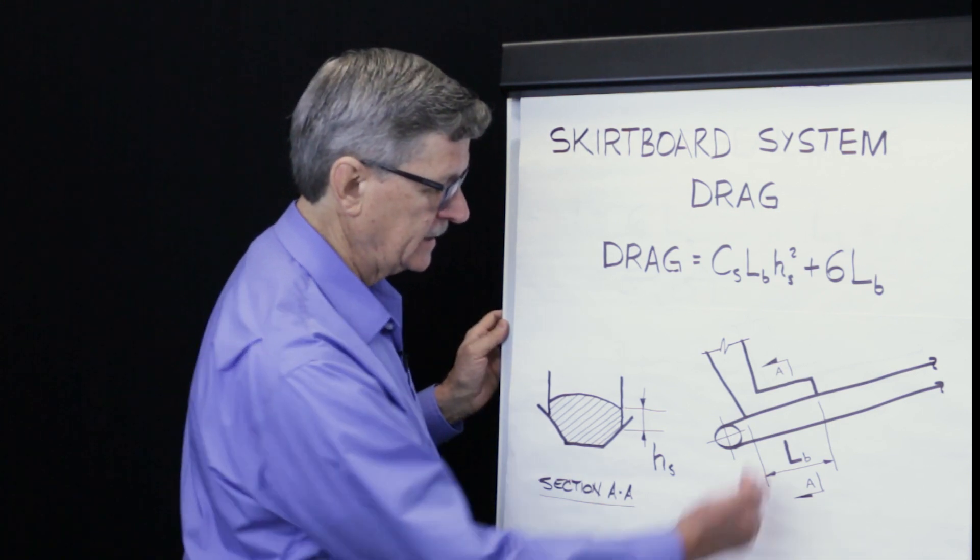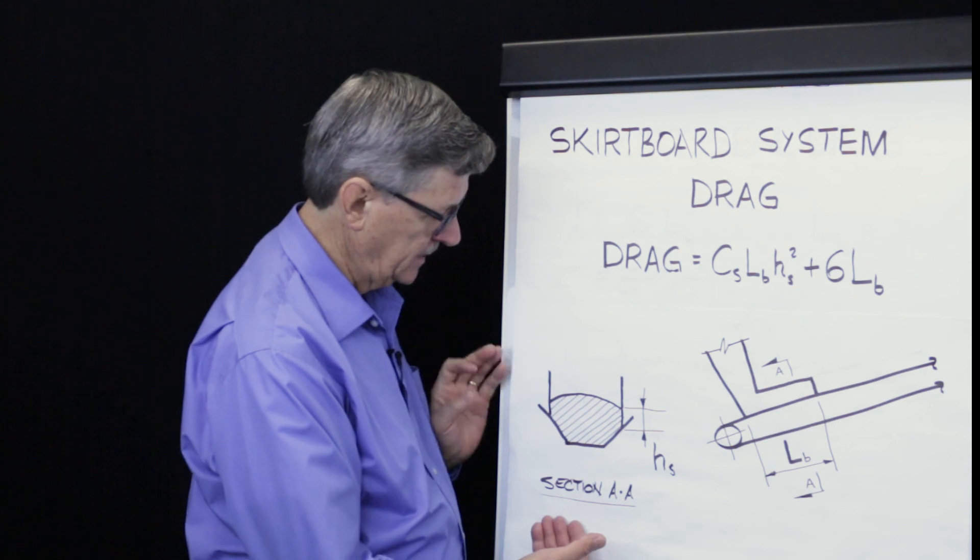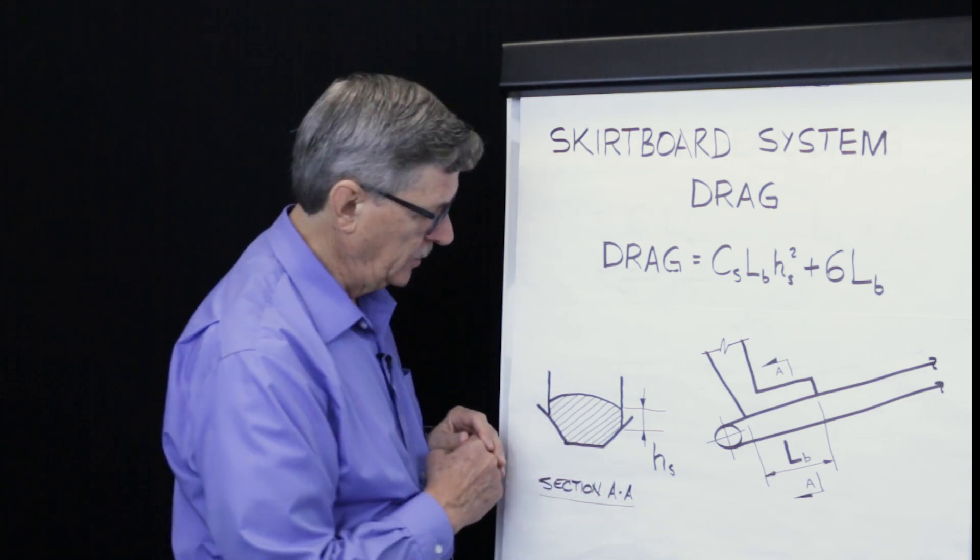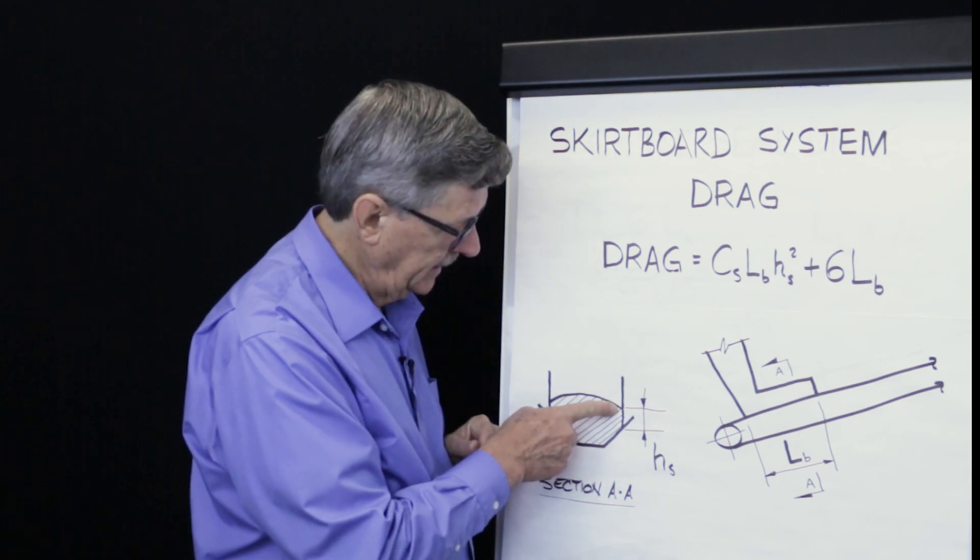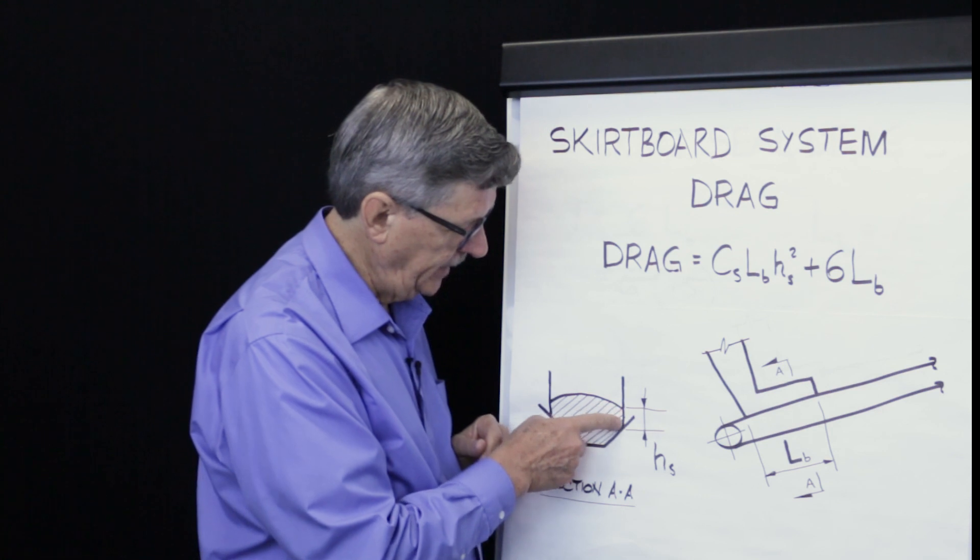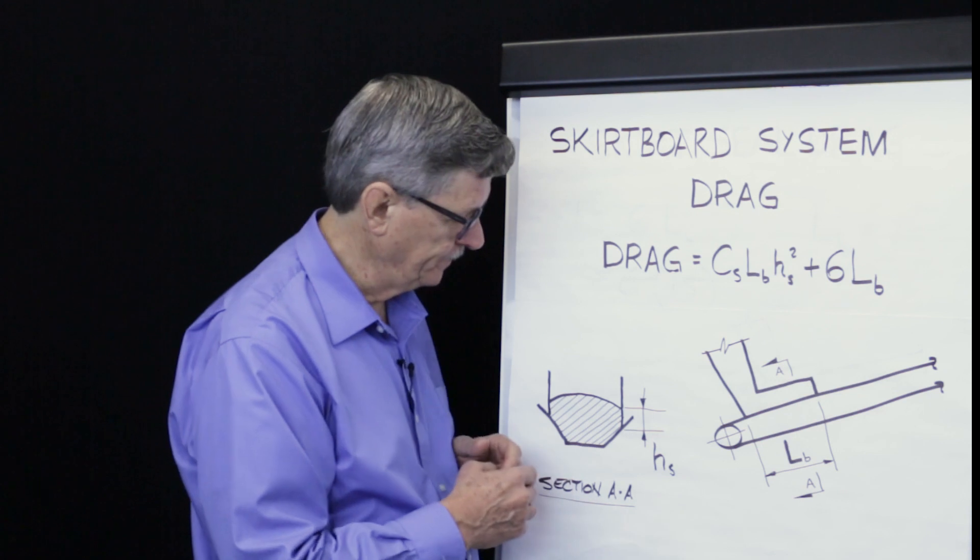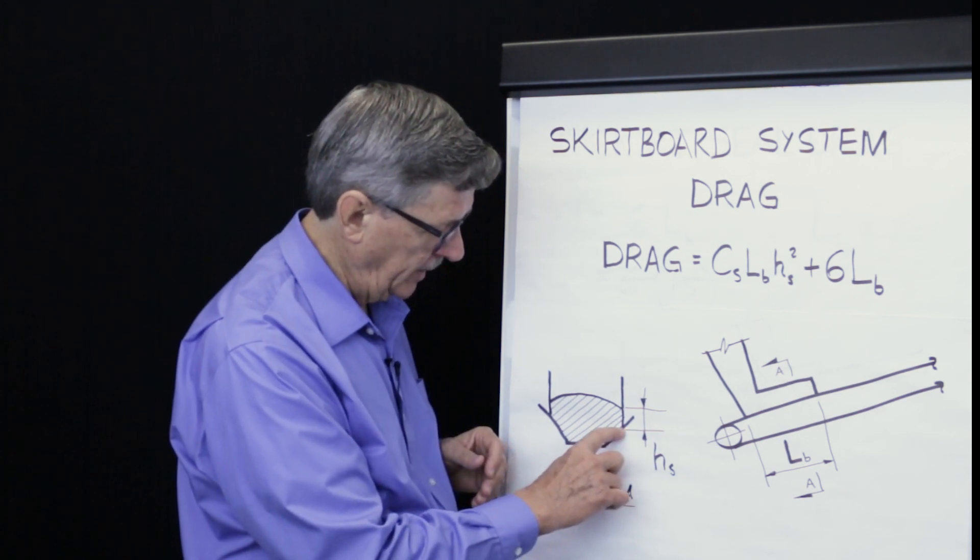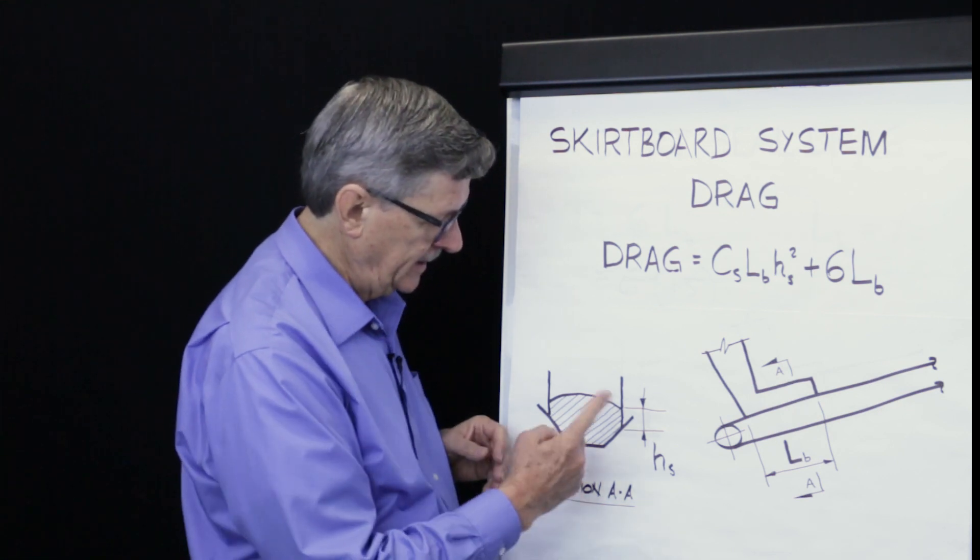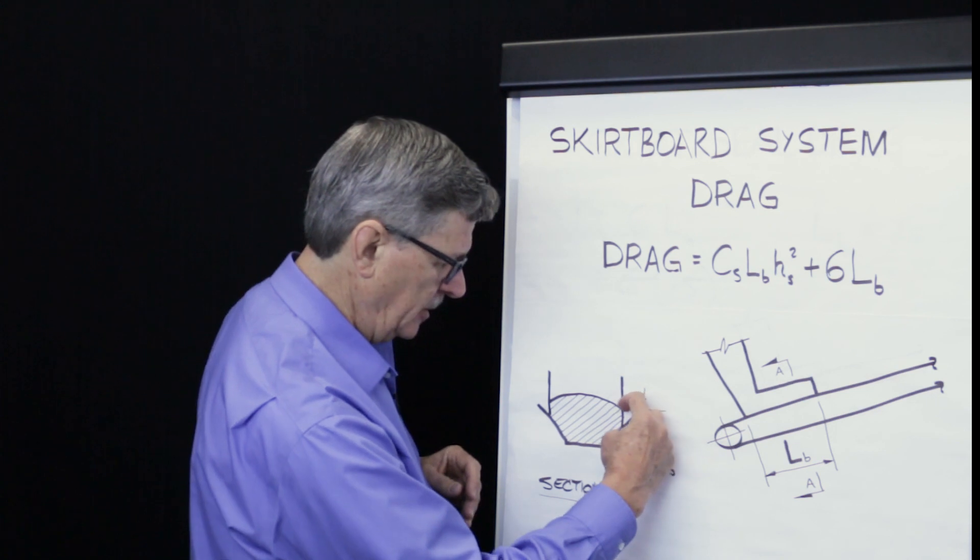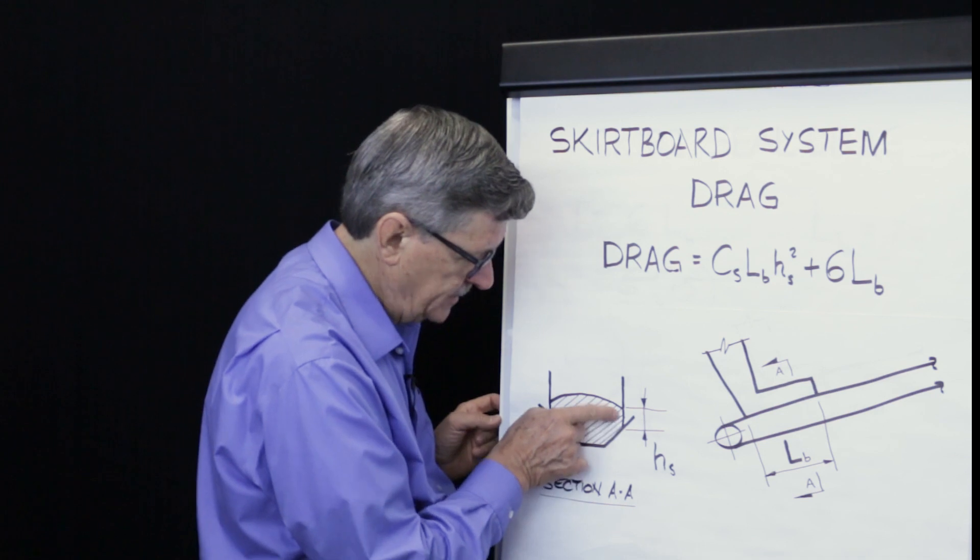Let's take a look at the cross section through this area. Section AA shows material within the skirt board zone. You can see two important things featured here. One is the area which depicts the material as it rubs against the skirt board material, normally steel, and the other is the area where the skirt board seal system rubs on the conveyor belt. An important dimension here is HS, the depth of the material within the skirt zone.